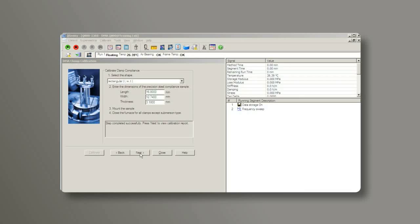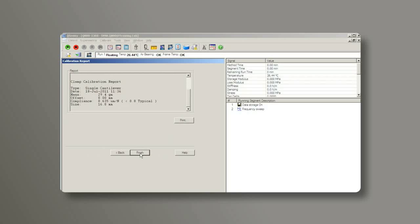After the calibration, click on next and check the report. Make sure the compliance value is lower than the maximum value which is shown on the right side of the screen. Now you have finished the single cantilever clamp calibration.